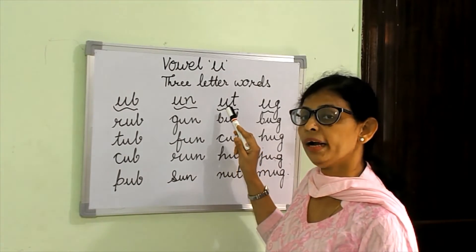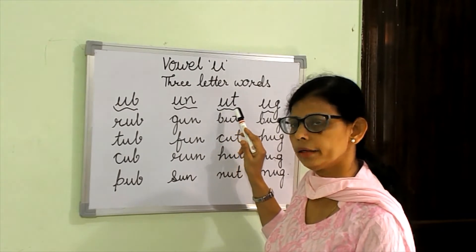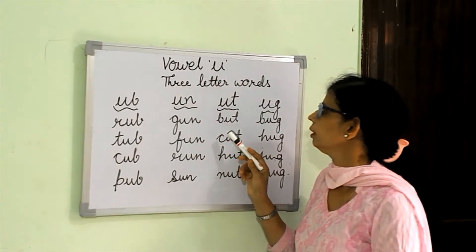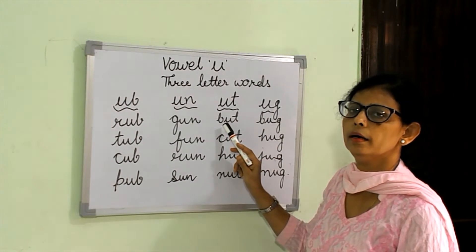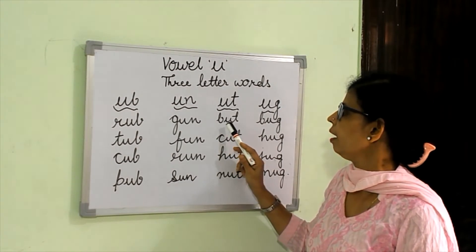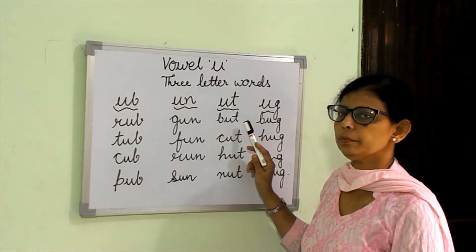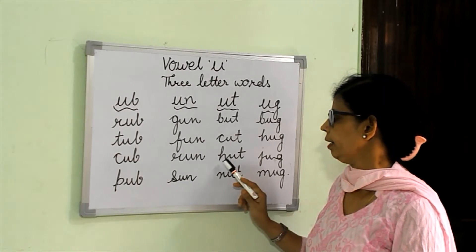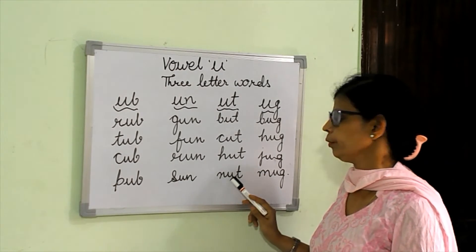Here the ending sound is UT. U says 'uh'. B, U, T — but. C, U, T — cut. H, U, T — hut.